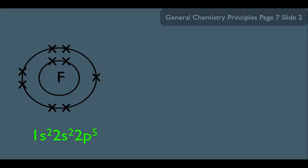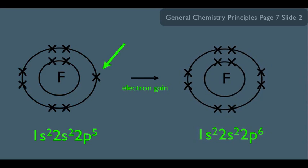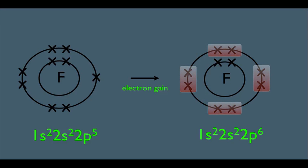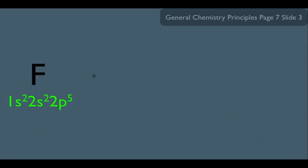So notice he almost has an octet. He's just missing one electron here. So there's an incentive for fluorine to simply gain an electron. And if he does, he'll become this and he'll attain his octet. So that means there's an incentive for fluorine to accept an electron. That's why typically fluorine behaves this way. He likes to accept an electron and then simply become F-.